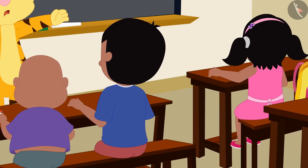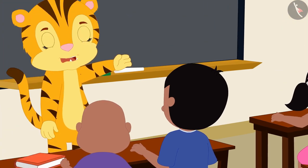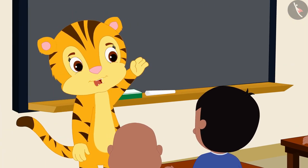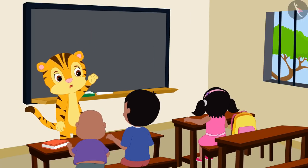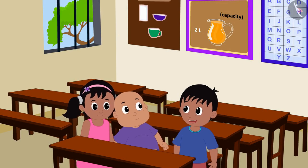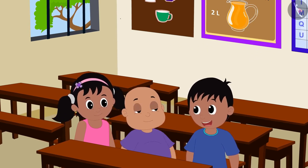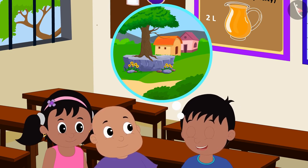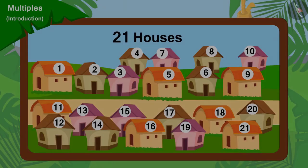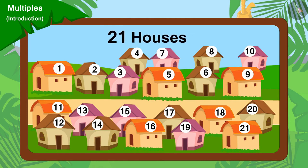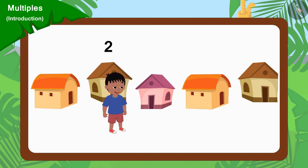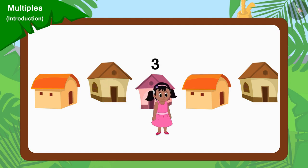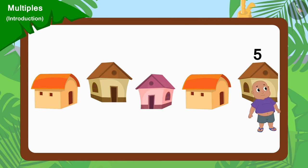Raju, Pinky and Bablu have been assigned the task to collect donations to help the poor by their teacher, Mrs. Khan. Raju told Pinky and Bablu a plan. He said that they would not go to the same house but go to different houses. There are a total of 21 houses in the village. Raju will go to every second house. Pinky will go to every third house and Bablu will go to every fifth house.